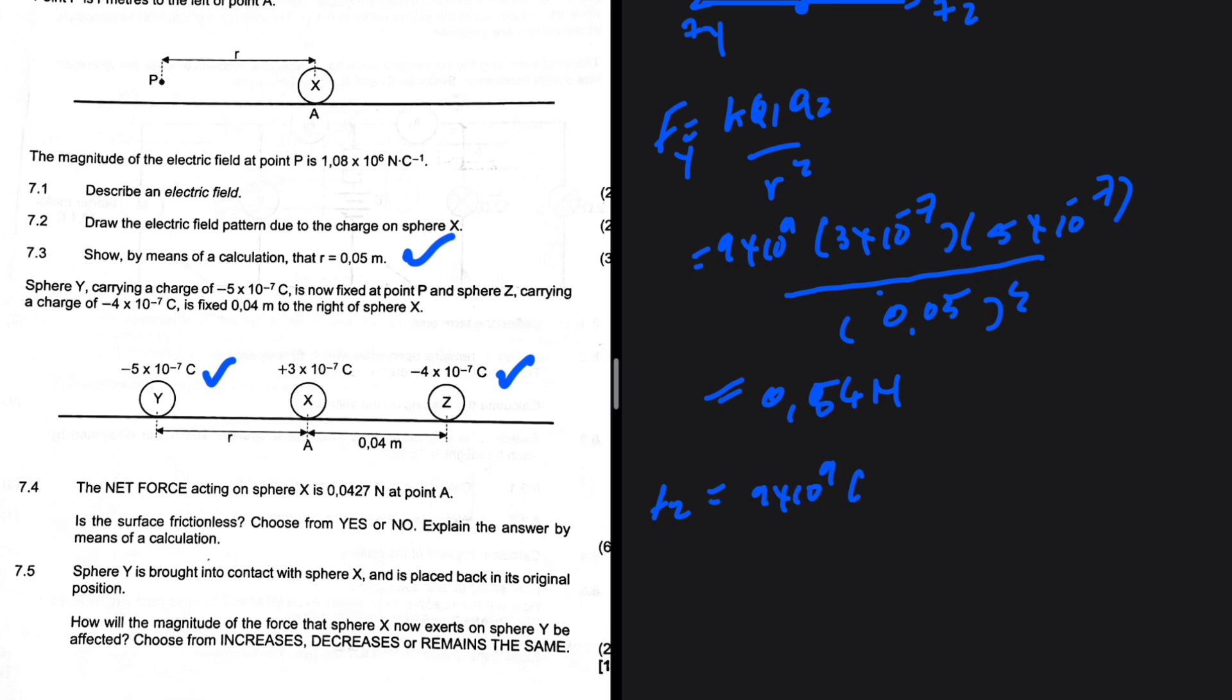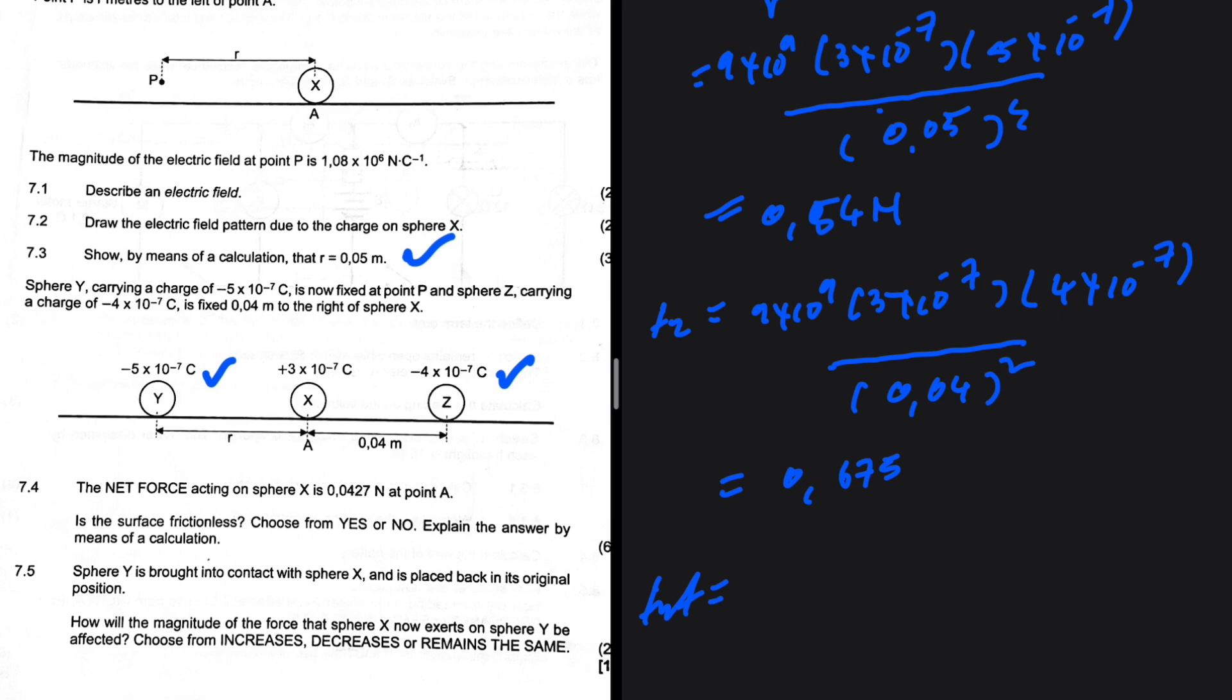And then F_Z, that is 9 times 10 to the power 9, 3 times 10 to the minus 7, the magnitude of Z, 4 times 10 to the minus 7, everything divided by 0.04 squared. Let me press my calculator once more. F_Z is 0.675. So the F net in the absence of friction shall be 0.675 minus 0.54. So that is 0.135. This is the net force that you'll experience in the absence of friction, 0.135. But then now it experiences a net force of 0.0427.